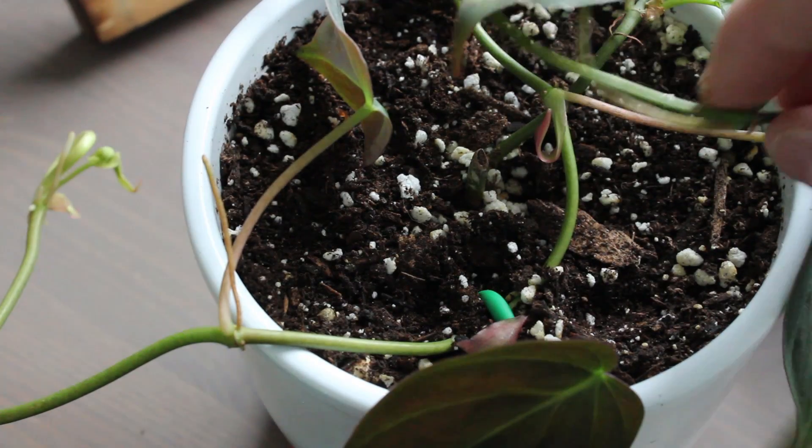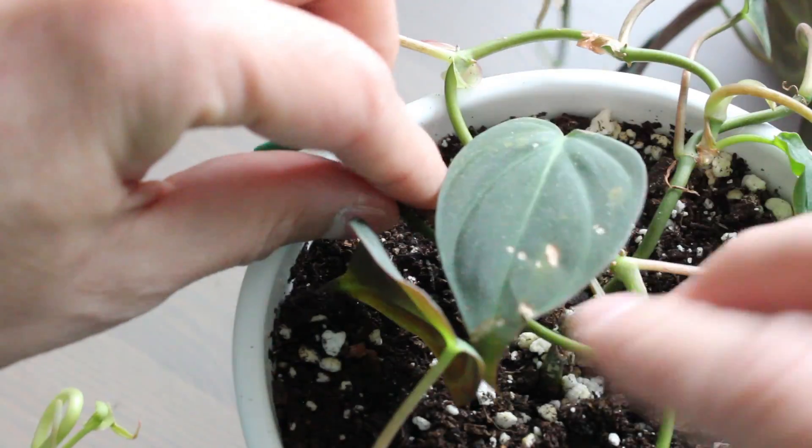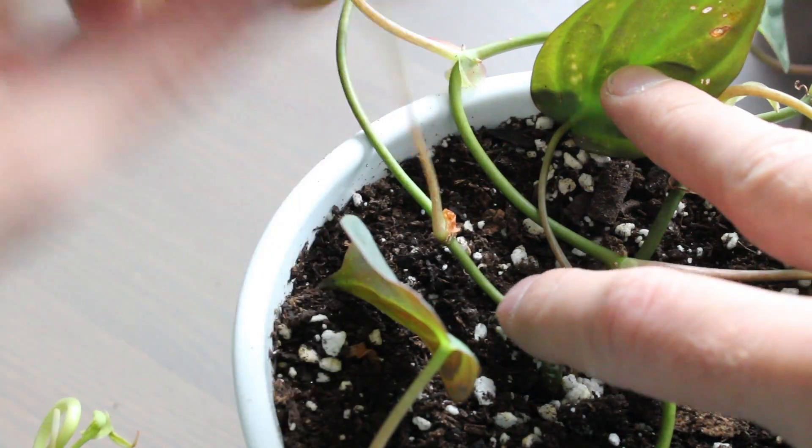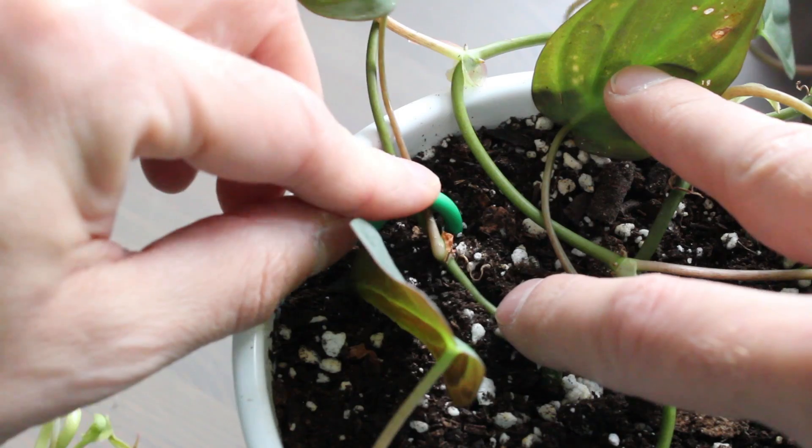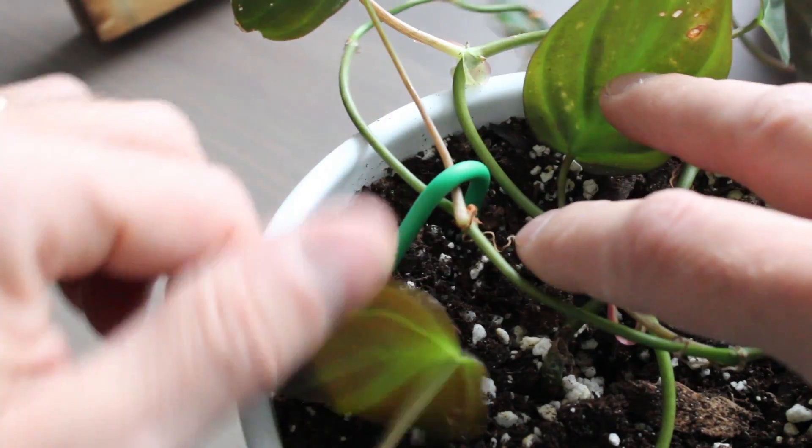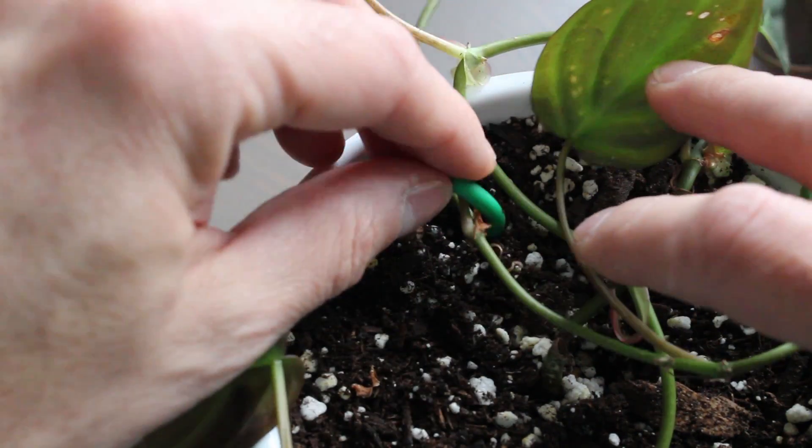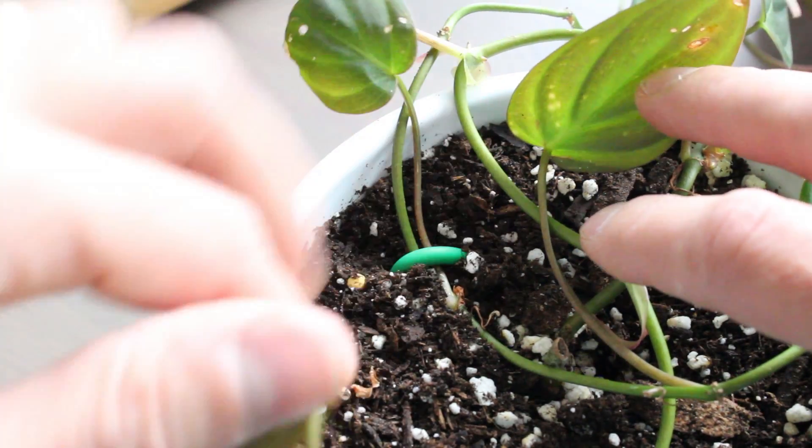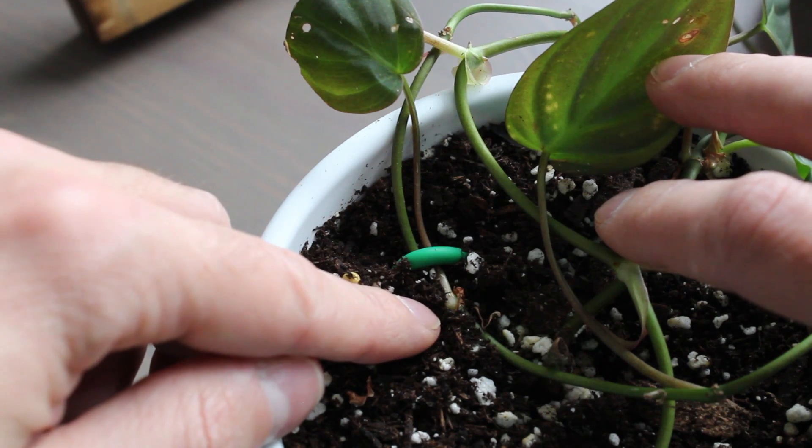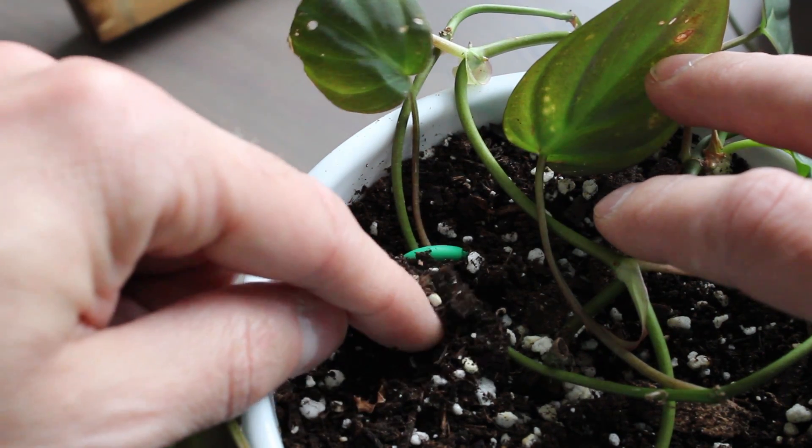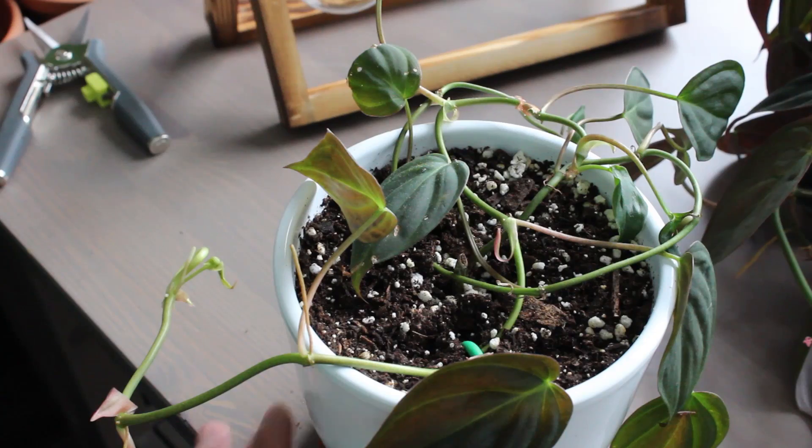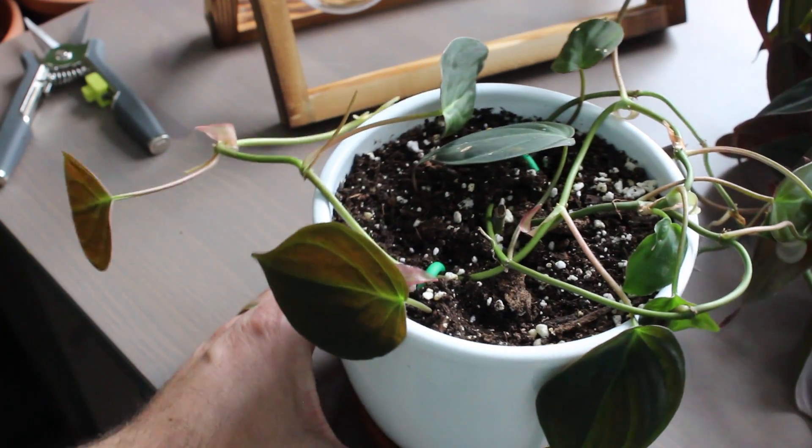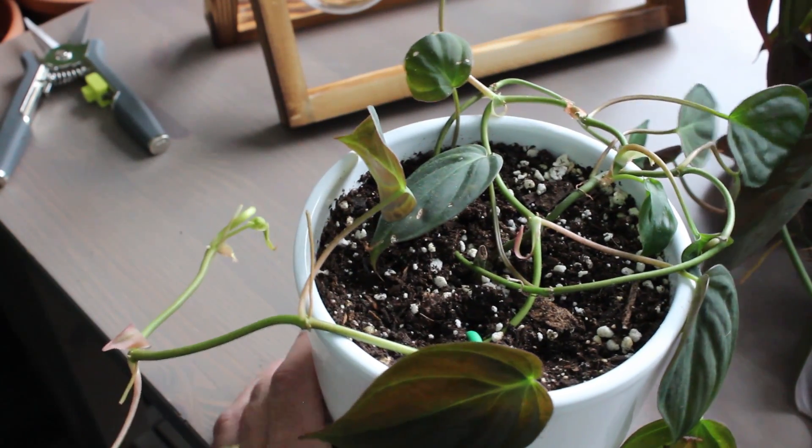I'm going to do the same thing, just kind of coil it over, find a leaf node area, and I'm just going to push that down there as well. These aren't the most appropriate stakes, but just far enough that it'll stay in the soil there. So this is where the leaf node and aerial roots are. I'm just going to cover that up with a little bit of soil. If any of you have ever done this method, just let me know how it has worked out for you in the past.